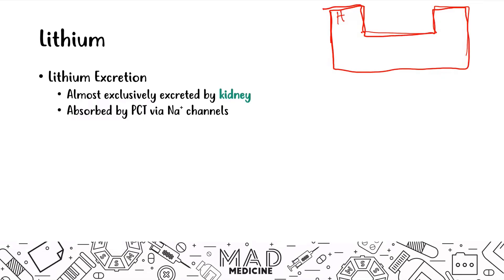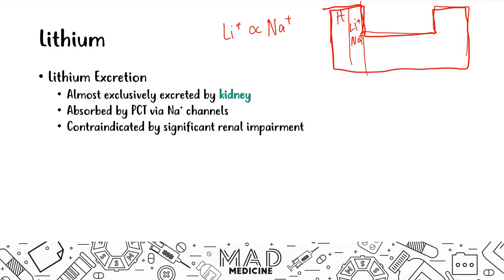Lithium is in the same column as sodium on the periodic table, so they're chemically closely related when it comes to excretion. A very big contraindication is significant renal impairment. If someone's kidneys aren't functioning properly, they may not be able to excrete lithium in their urine, which will lead to higher lithium levels and acute toxicity. Renal impairment is just one cause — another is drug-to-drug interactions, since lithium is excreted in the PCT via sodium channels.